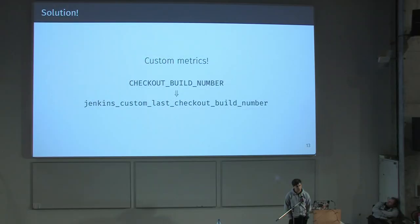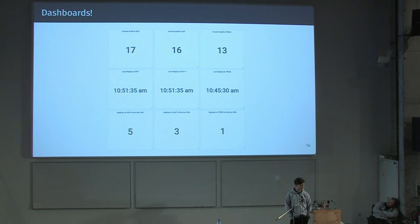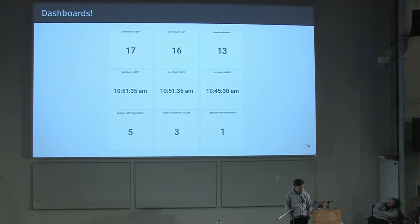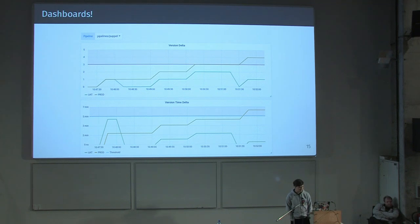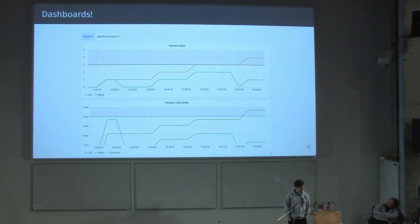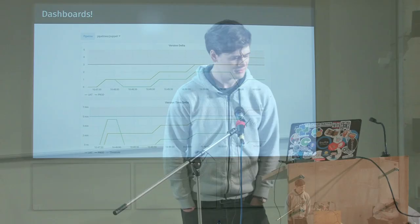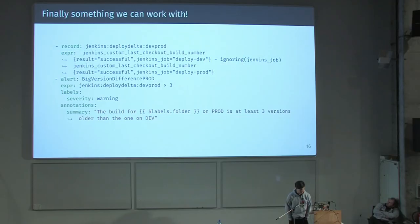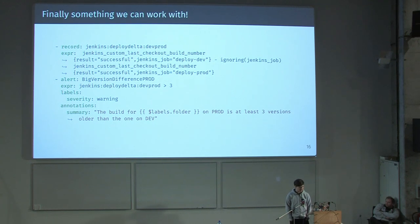So I added custom metrics. This allows us to use environment variables set during the build. In our pipelines, we propagate the build number of the first job in the pipeline to every subsequent job. By specifying a tag, we can make a metric out of that, and then get nice dashboards with current versions running and last deployed timestamps. We can also make graphs — here you can see the version delta between prod and dev, UAT and prod, and UAT and dev. There's also a threshold displayed, so we can alert on it. This alert will trigger if the version in prod is three versions behind the one in dev.